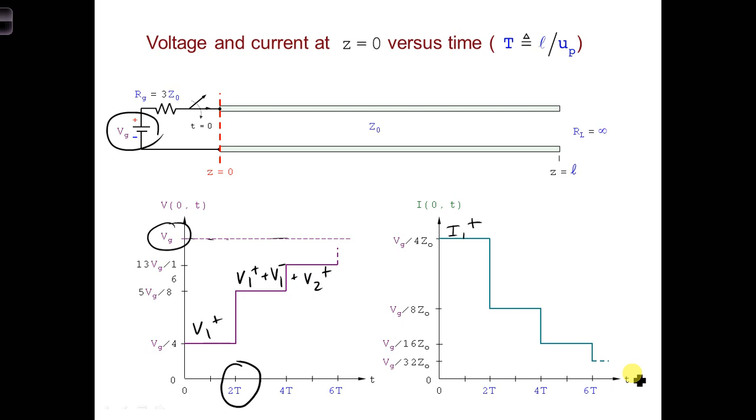Can you think of a basic circuit element for which this would also happen? Indeed, these plots resemble those of a charging capacitor by a battery through its 3Z0 resistor.